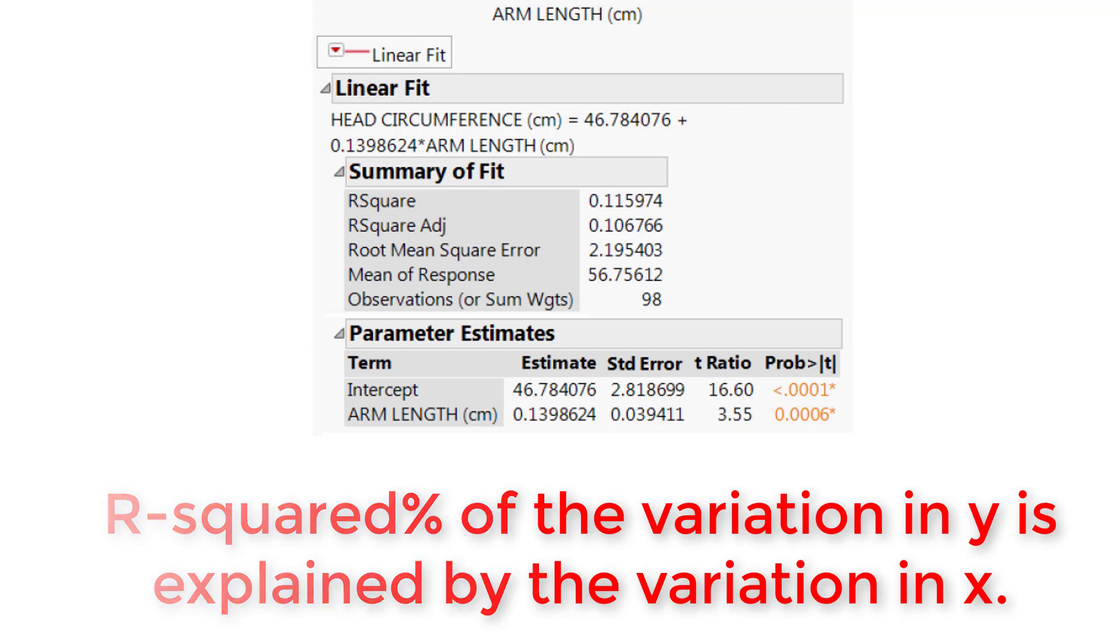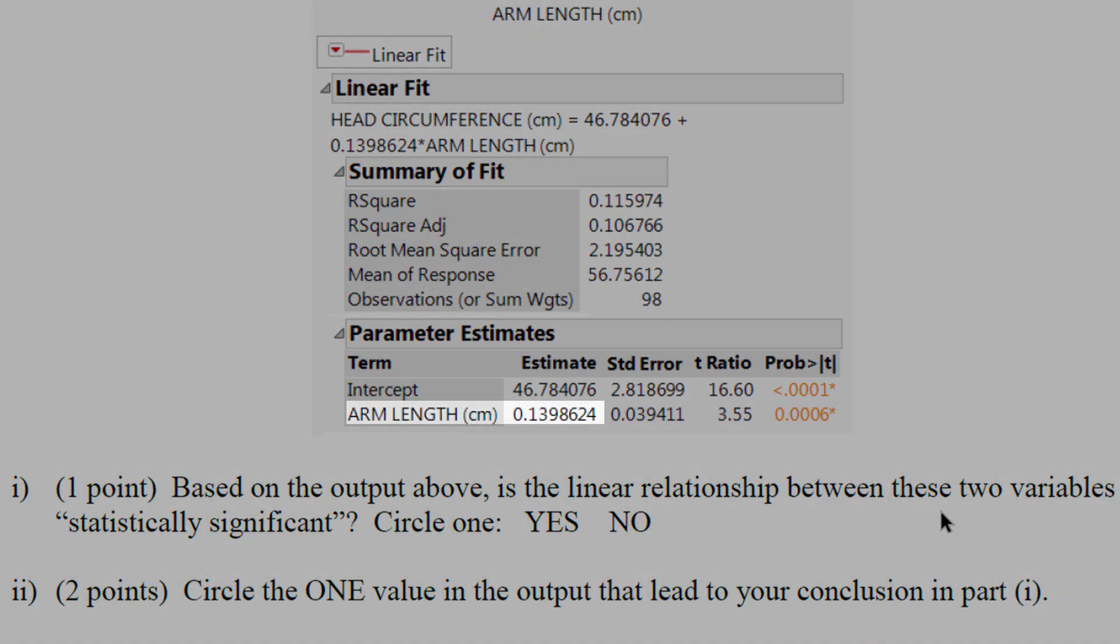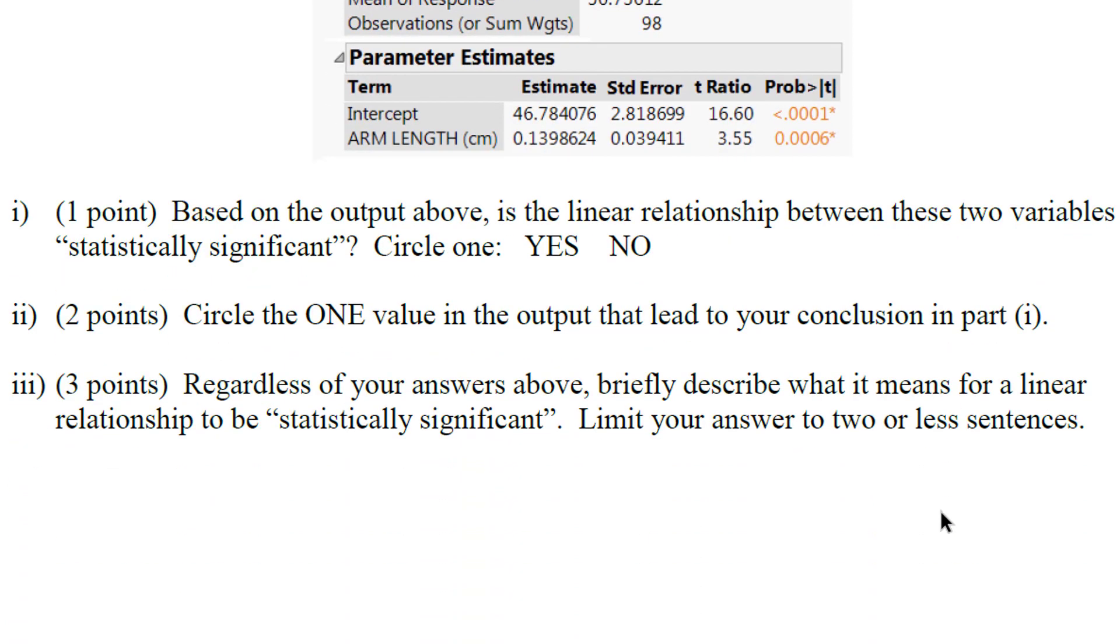Some important stuff to note right here that these problems don't ask, but you might be asked to interpret the r-squared somewhere on your test. So we have the intercept and we have the slope down here. We want to know if the relationship between the two variables in the model is statistically significant.